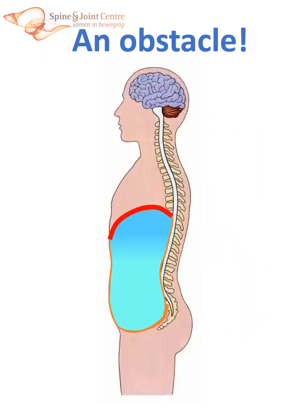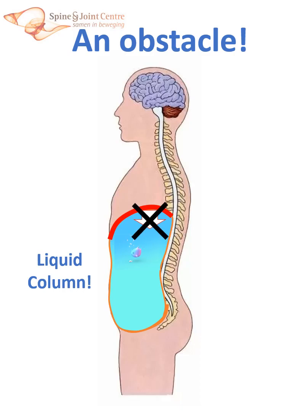The diaphragm separates the chest and abdominal cavities. In fact, the abdominal cavity is a liquid-filled vessel, as shown in previous videos, and such liquid volume cannot be compressed. Therefore, when contracting, the diaphragm cannot move downward unless the abdominal content in some way moves aside.